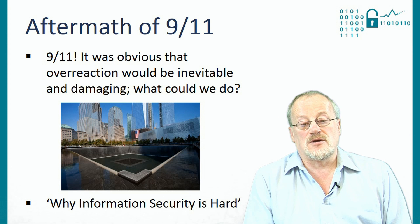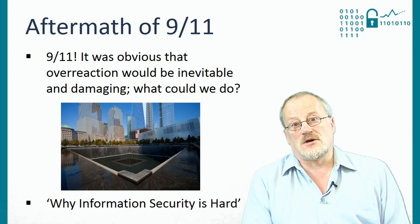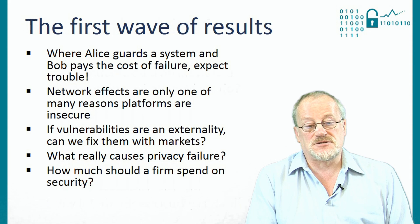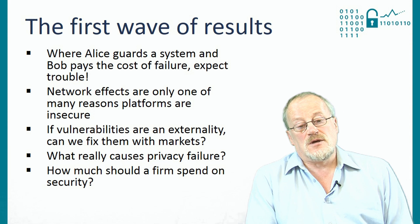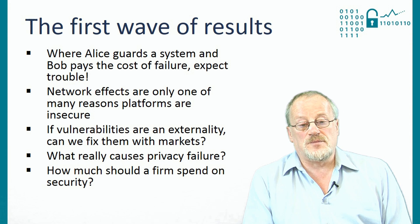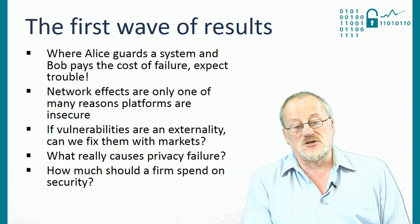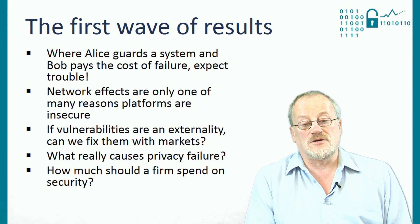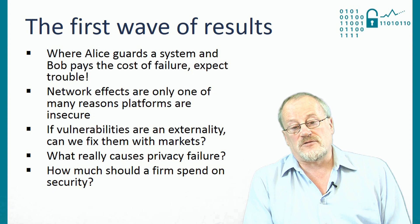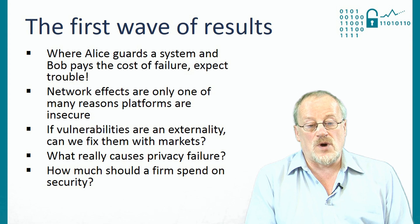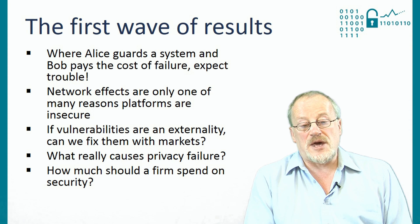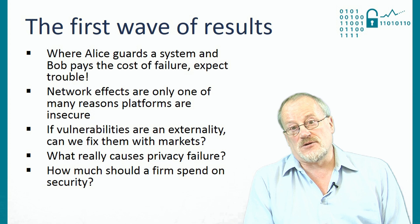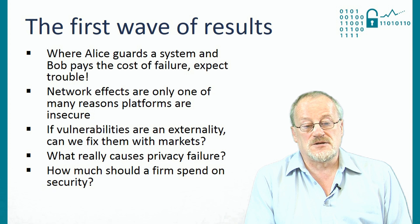We got a wave of results come out over the next few months as various people got interested. The take-home message is that where Alice guards a system and Bob pays the cost of failure, you can expect trouble. Network effects are only one of many ways in which platforms can become insecure as a result of poor incentives.